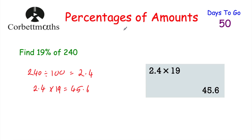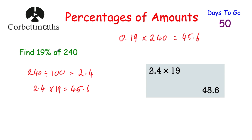Now I want to show you something called a multiplier. In a few days' time we'll go through compound interest, where multipliers are quite useful. To work out 19% of a number using a multiplier, you change the percentage to a decimal: 19 divided by 100 is 0.19, so 19% is the same as 0.19. Multiply 0.19 by 240 and you also get 45.6. So you can multiply by the decimal equivalent to find the percentage.